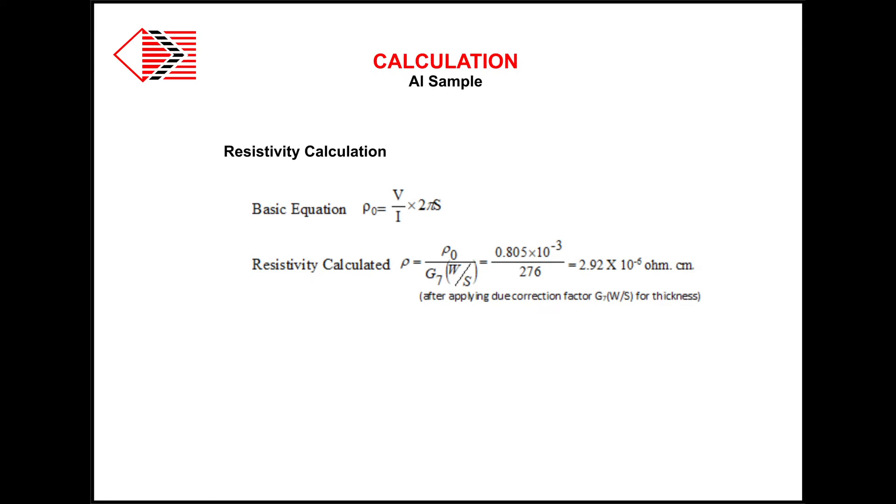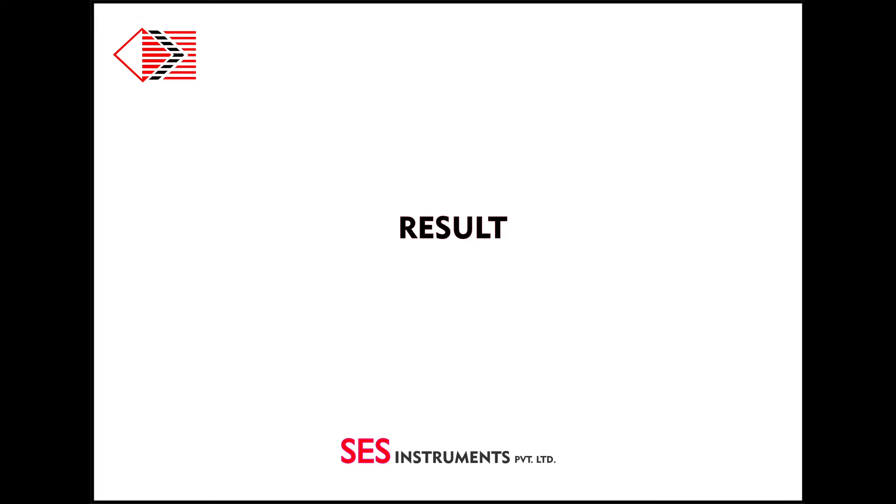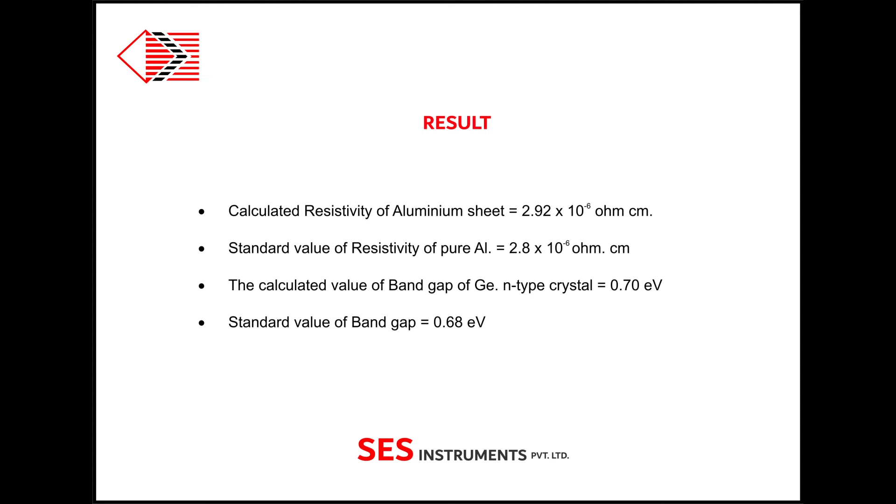This is the equation used for resistivity calculation. For details about the derivation of this equation, you may refer to user's manual equation number 3. Since the thickness of the crystal is very small compared to probe distance, a correction factor G7 for non-conducting bottom surface will need to be applied to get correct resistivity. Again, the details can be studied in user's manual. After calculation, we get the value of resistivity and band gap of aluminum sample and germanium N-type crystal.